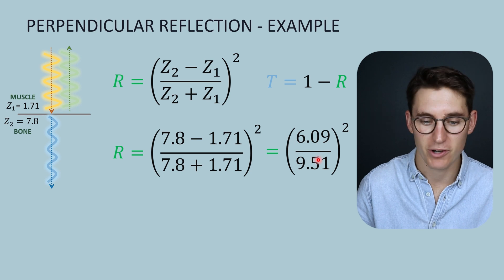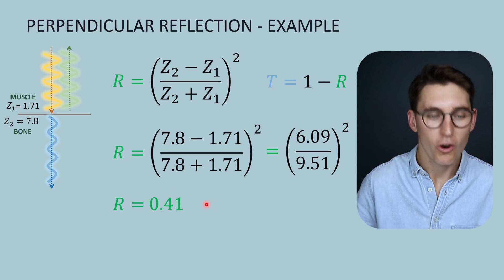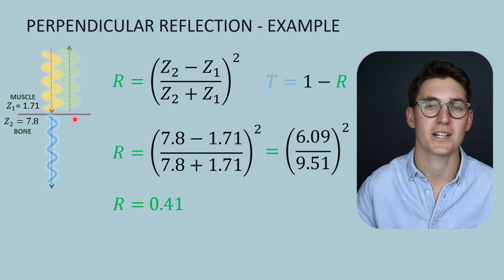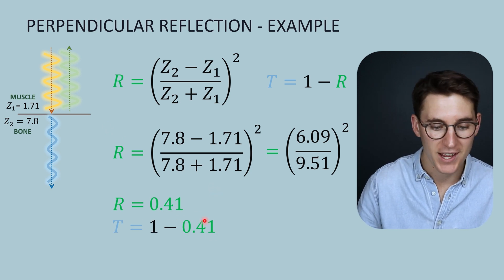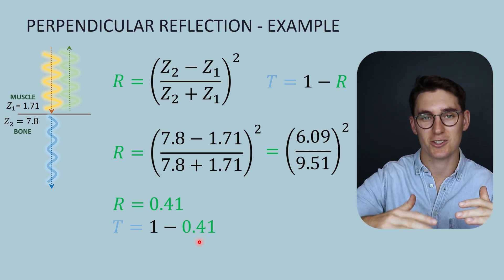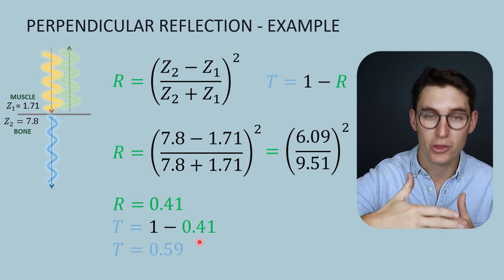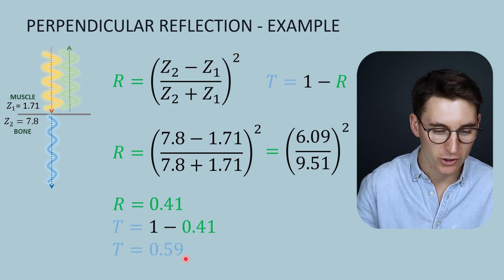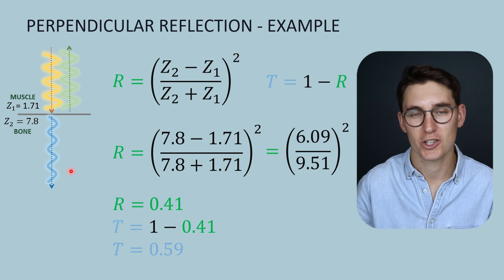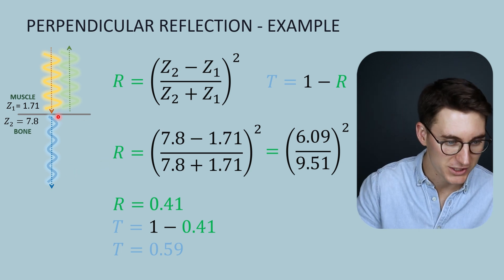Plugging in the values gives us 6.09 rayl over 9.51 rayl. When we square that value, we get 0.41 — meaning 41% of the incident ultrasound energy is reflected back towards our ultrasound probe. Taking 1 minus our R value gives the transmittance. So if 41% is reflected back, then 59% is transmitted through that tissue boundary. You may be wondering how 59% of the energy makes it through into bone, since scanning over ribs seems to return no signal.